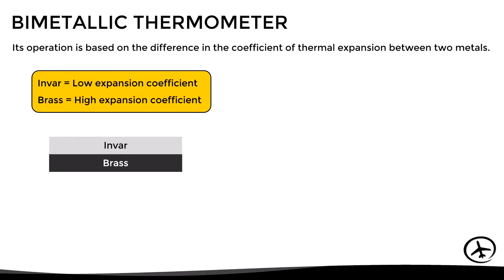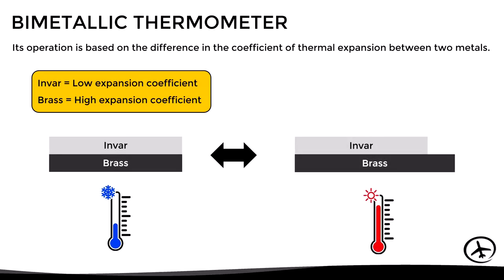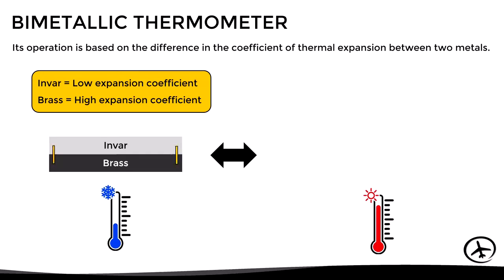This implies that when heated, the brass strip will expand more than the invar strip. For example, if we have two strips with the same length at a low temperature and the temperature increases, then the brass strip will expand much more than the invar strip since it has a higher expansion coefficient.